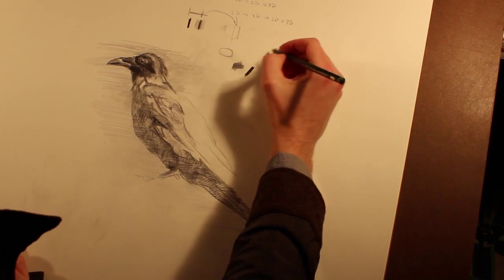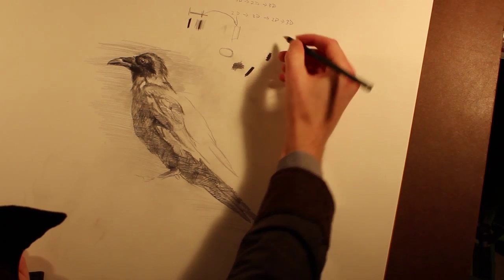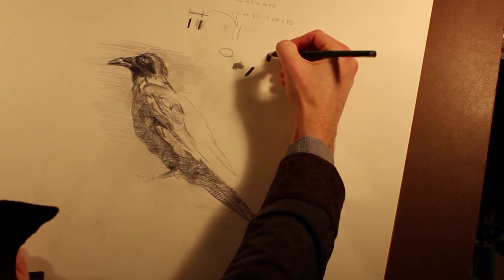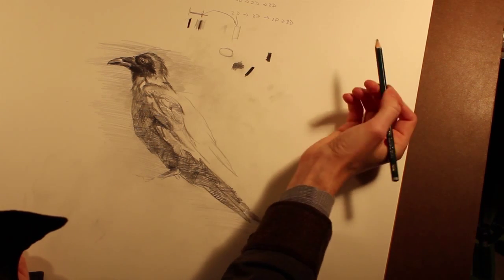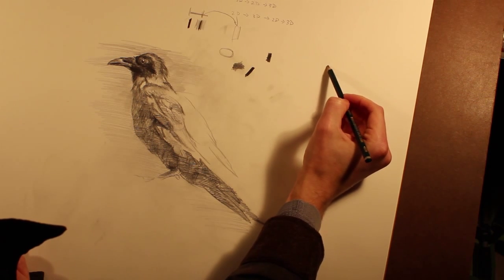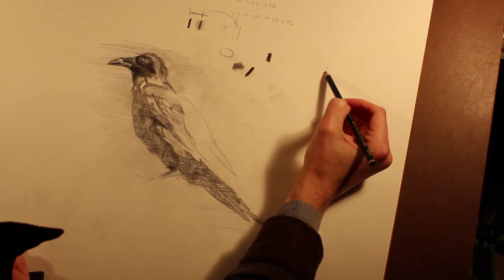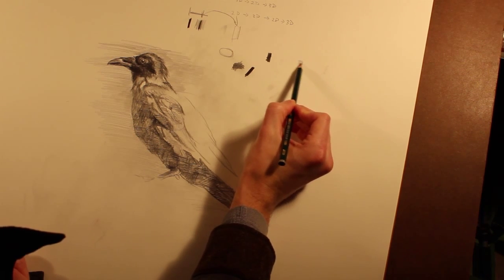Basically you take your deepest, the darkest value you can get with your pencil, pen, charcoal, whatever. And then you have your brightest white and then your light value and then you kind of pick a middle value.